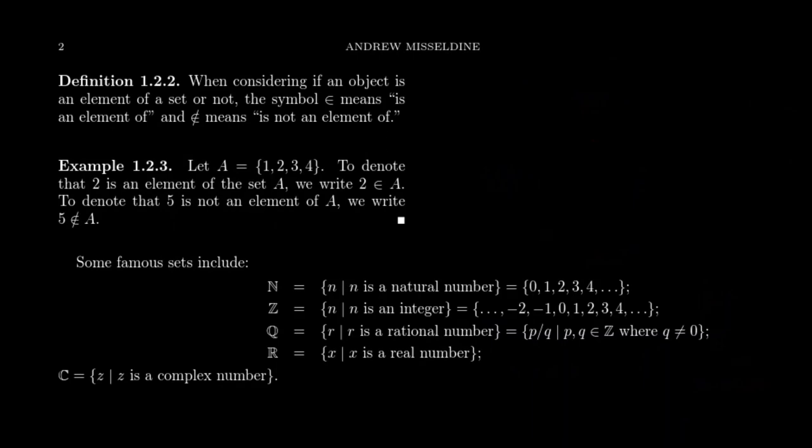We have a symbol that describes this relationship. When considering if an object is an element of a set or not, we use this symbol right here. It kind of looks like an E. Honestly, I think the symbol sort of derived from the symbol Epsilon, the Greek letter Epsilon, although it doesn't really look like an Epsilon anymore. This means that you're an element of a set. And then if you put a slash to that symbol, that would negate the symbol. That's true for basically any mathematical relationship. Draw a slash through it and it negates that object. That would mean you're not an element of the set.